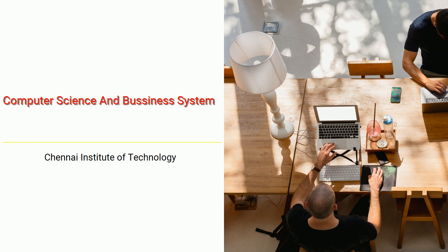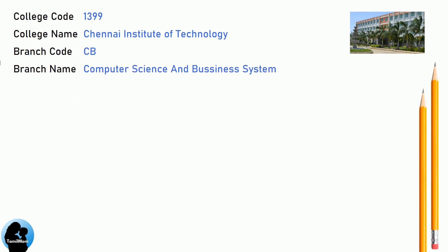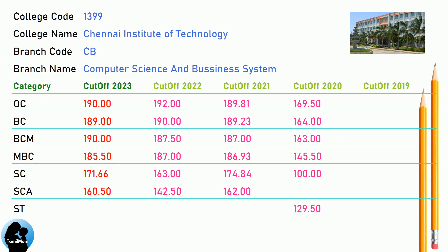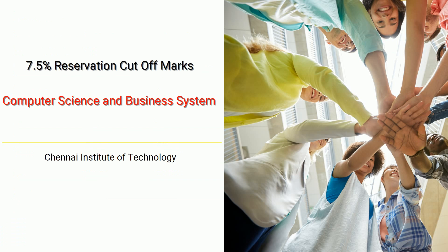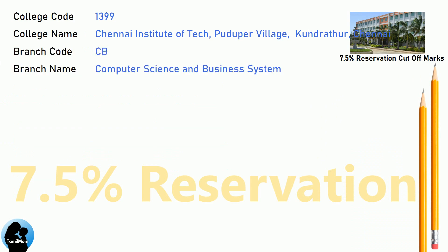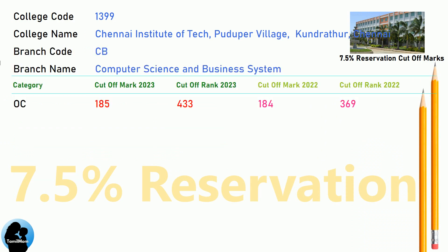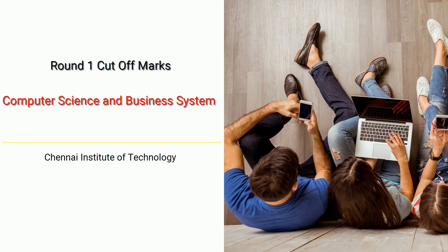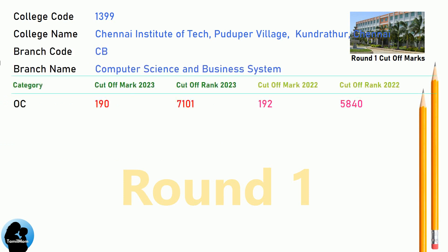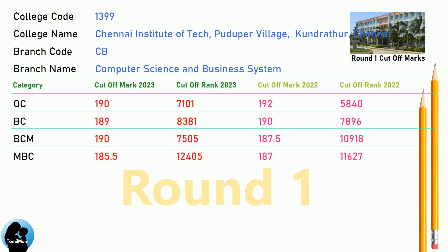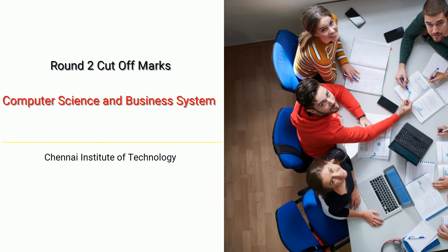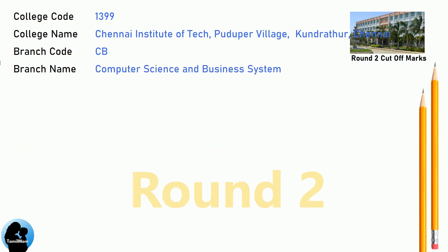DNA Cut-off for Chennai Institute of Technology in Computer Science and Business Systems. DNA 7.5 Reservation Cut-off for Chennai Institute of Technology in Computer Science and Business Systems. DNA Round 1 Cut-off for Chennai Institute of Technology in Computer Science and Business Systems. DNA Round 2 Cut-off for Chennai Institute of Technology in Computer Science and Business Systems.